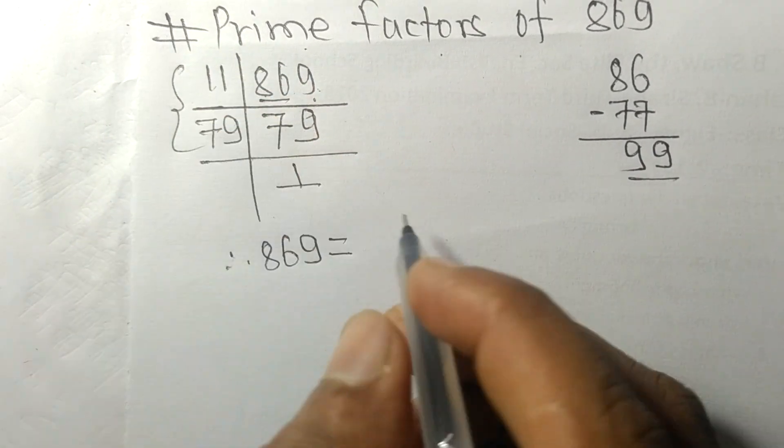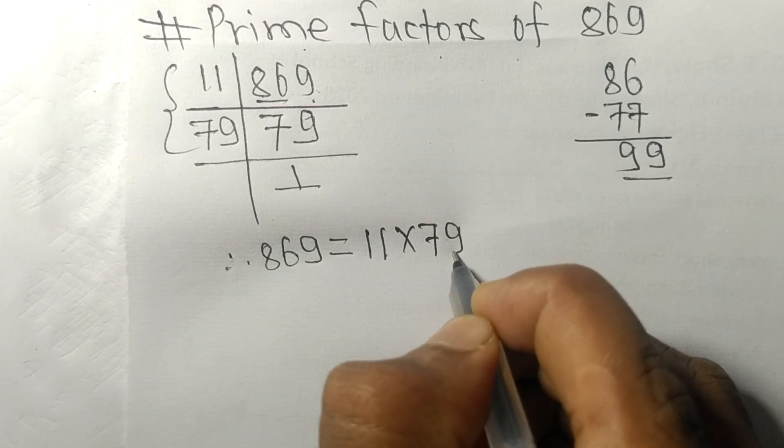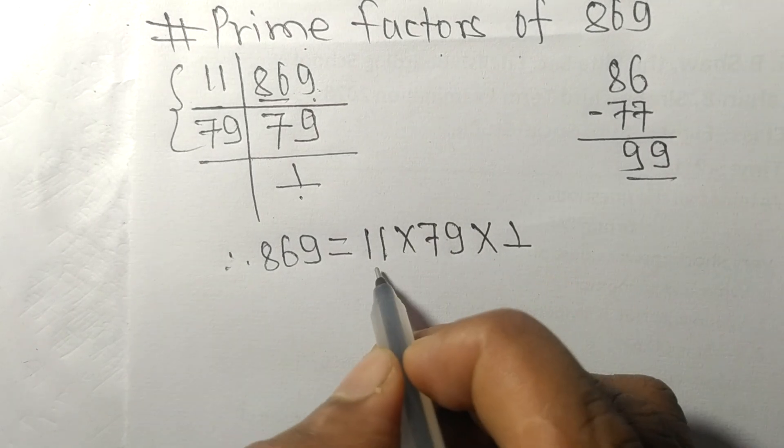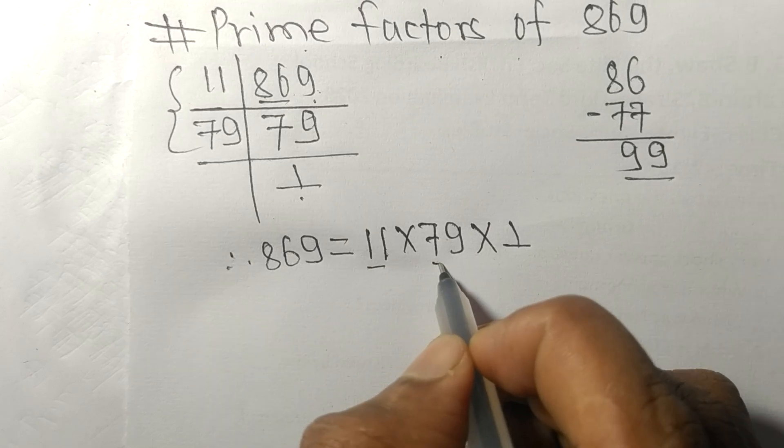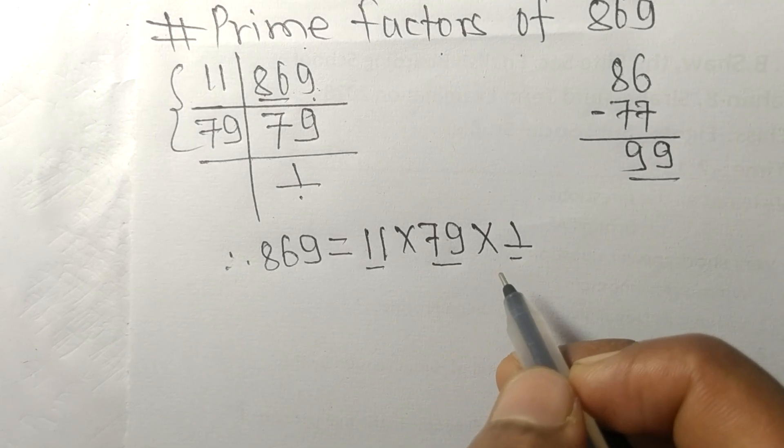to, from this side, 11 times 79. From here it is 1. So 11, 79, and 1 are the prime factors of 869.